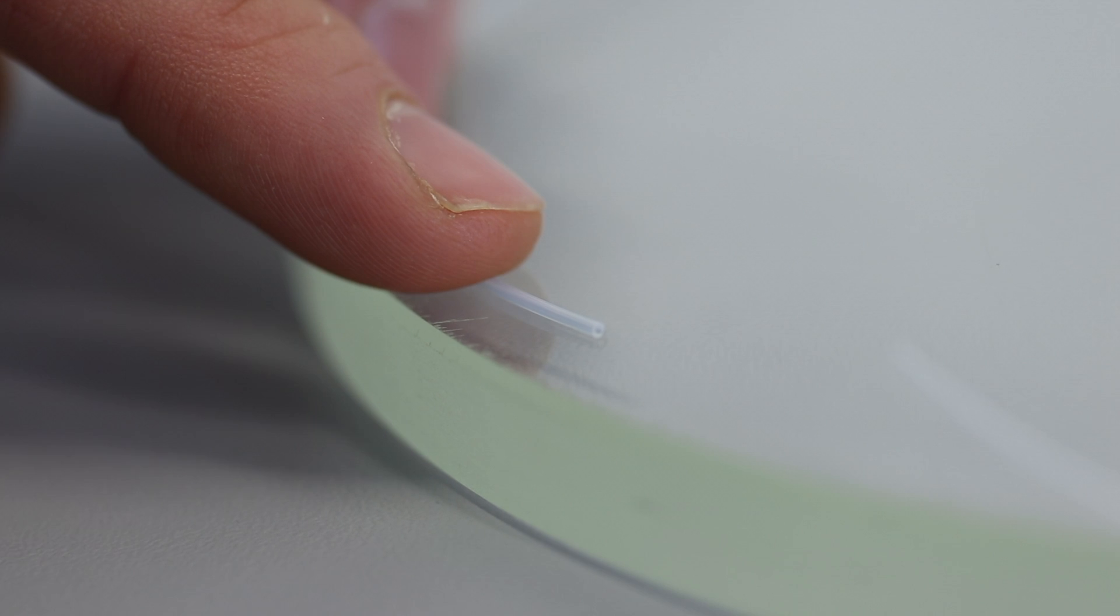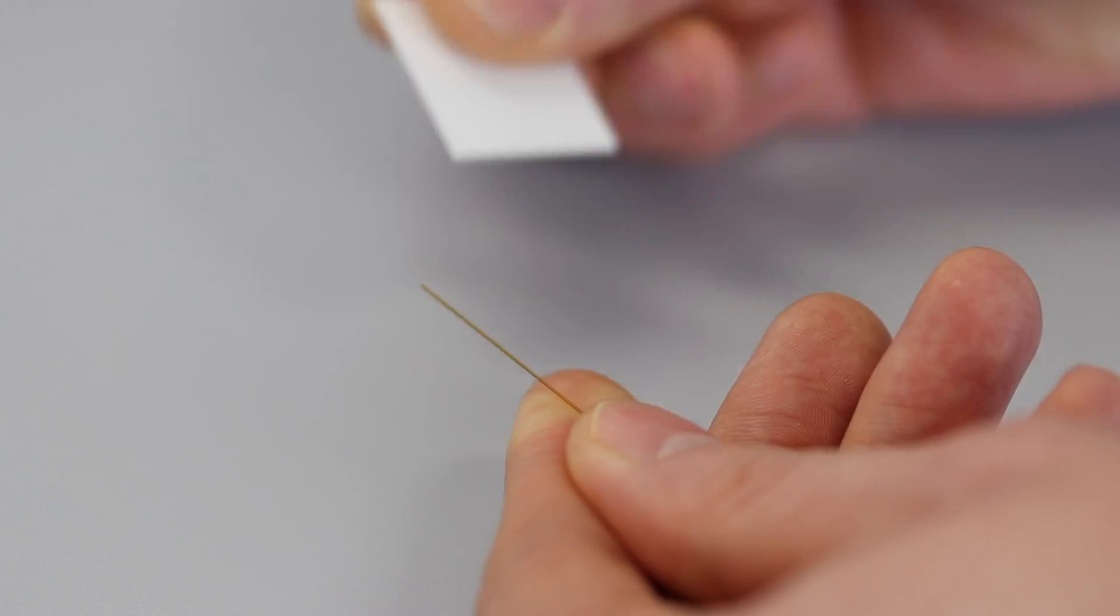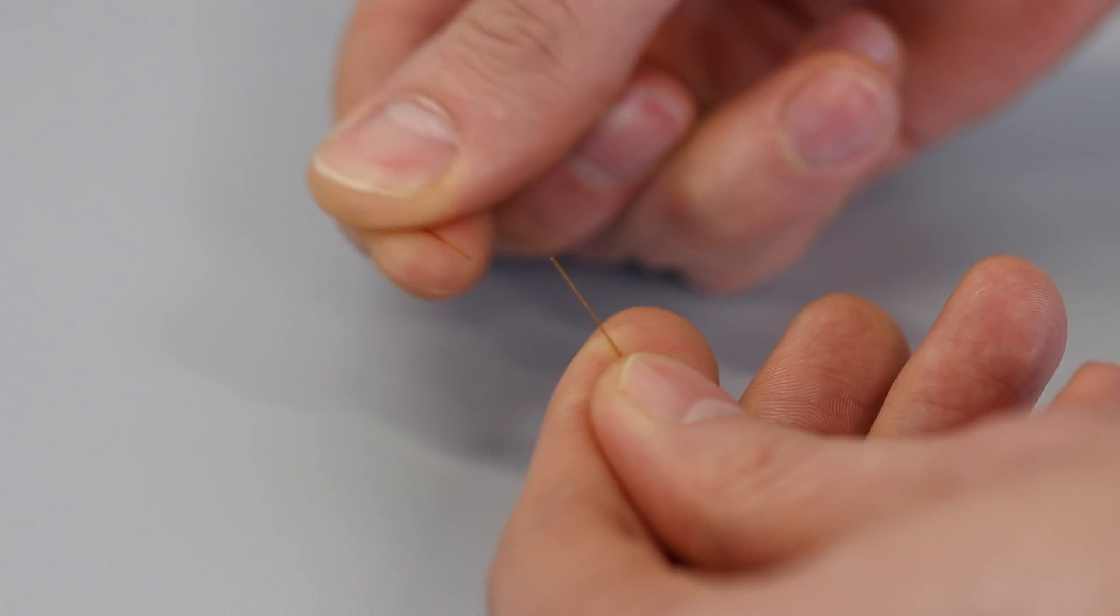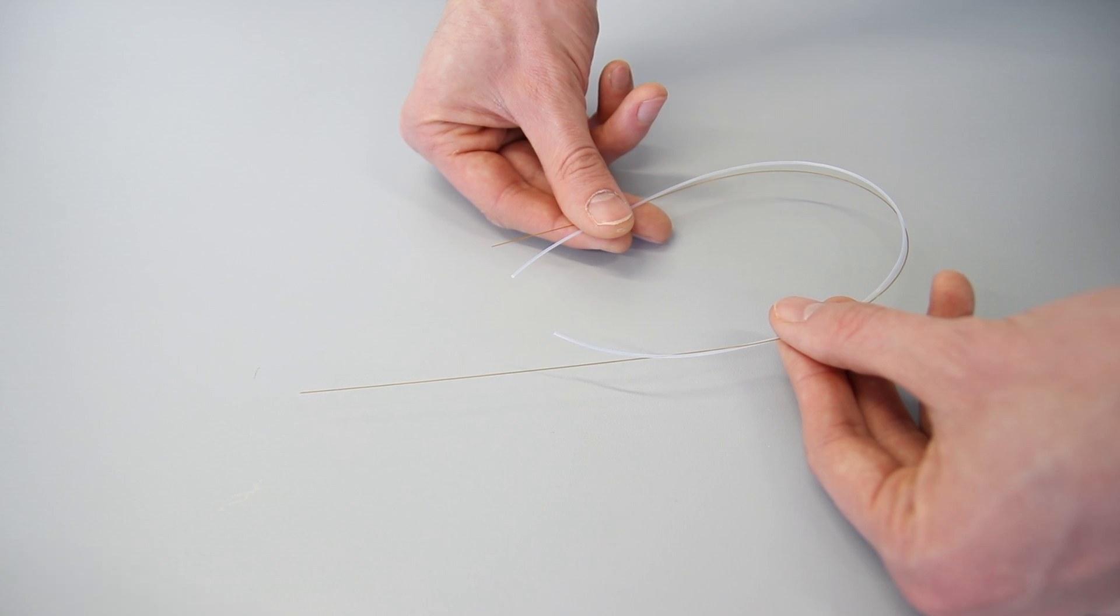Prepare the PTFE protective tubing and the fused silica capillary. To cut the capillary, use the fused silica tubing cutter. It should be approximately 5 cm longer than the PTFE tubing.